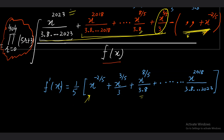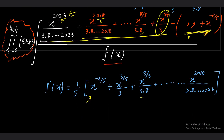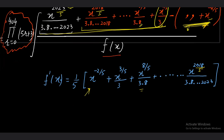The last term will have 2023, giving 2023/5 and 2018/5. When you take the derivative of the last term you get x^(2018/5) upon (3·8·...·2023). So the expression we subtracted, including the x^(−2/5) factor, is nothing but 5 times f'(x).